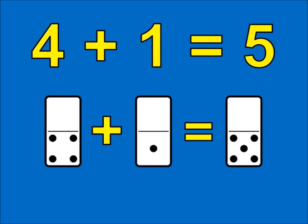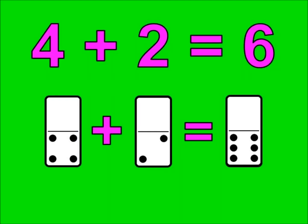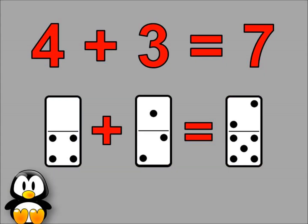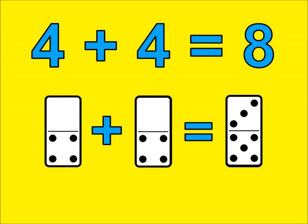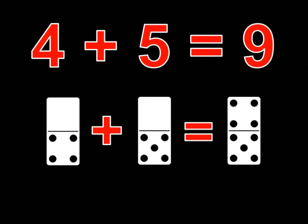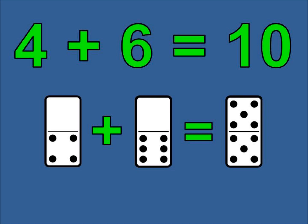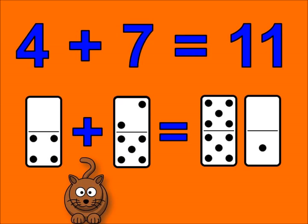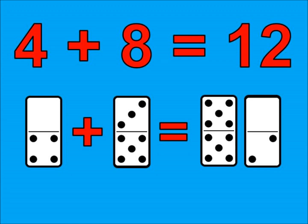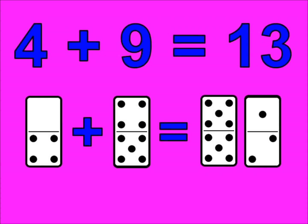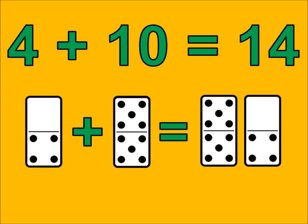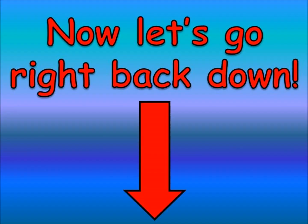4 plus 1 is 5. 4 plus 2 is 6. 4 plus 3 is 7. 4 plus 4 is 8. 4 plus 5 is 9. 4 plus 6 is 10. 4 plus 7 is 11. 4 plus 8 is 12. 4 plus 9 is 13. 4 plus 10 is 14. Now let's go right back down.